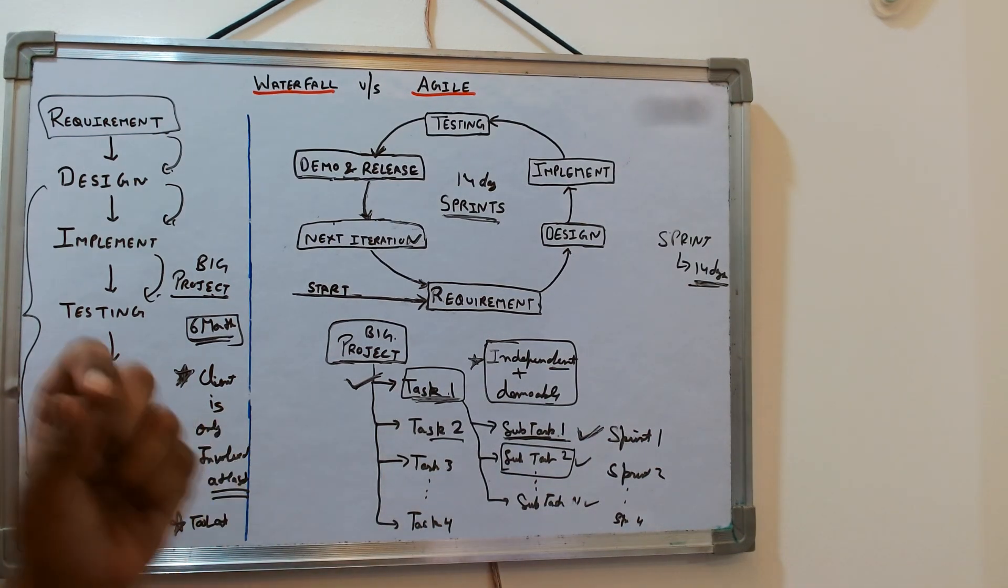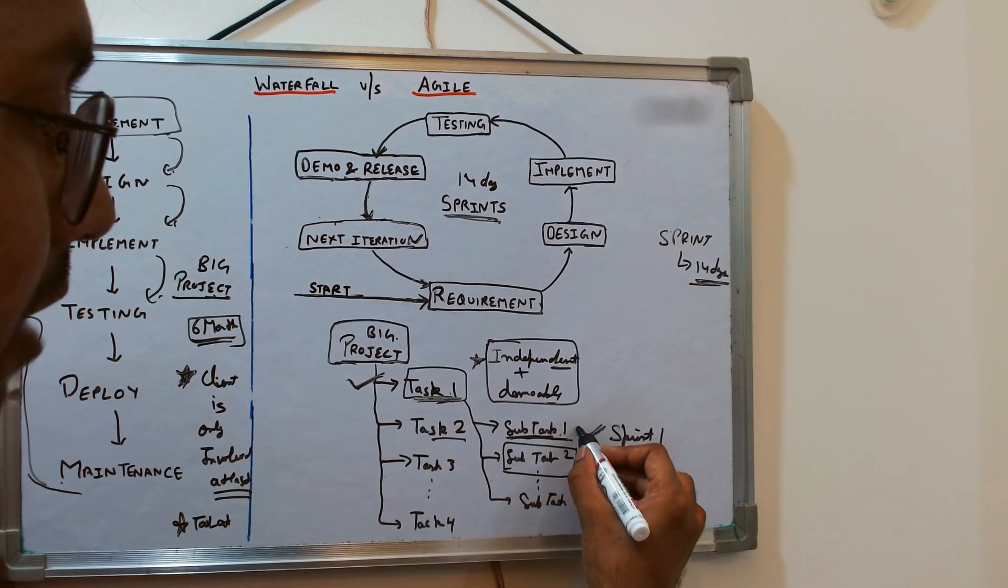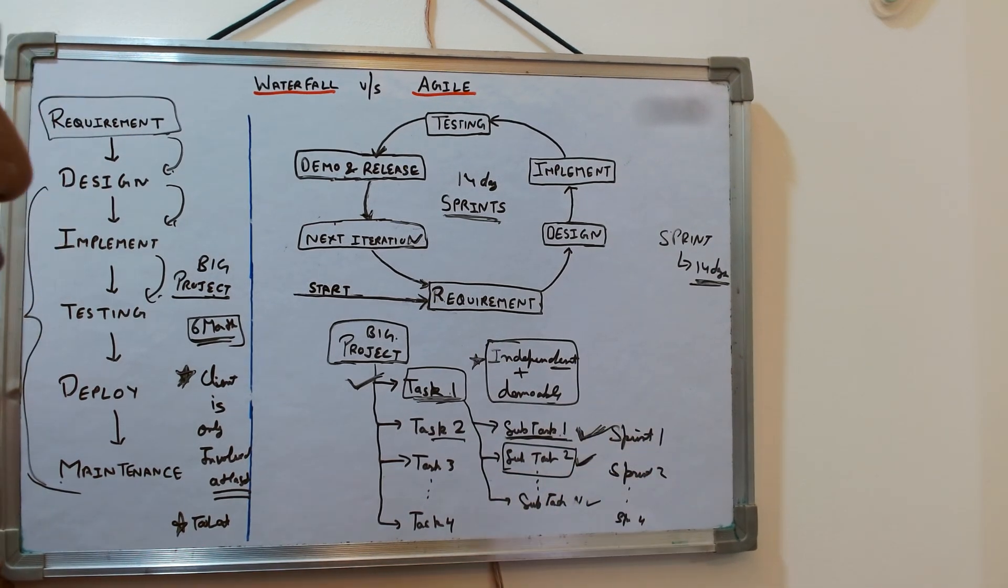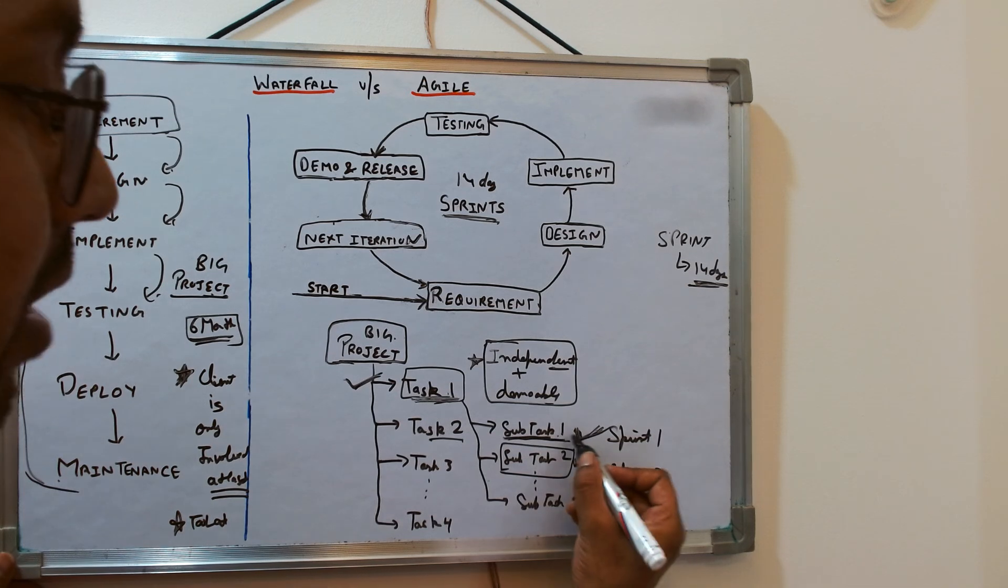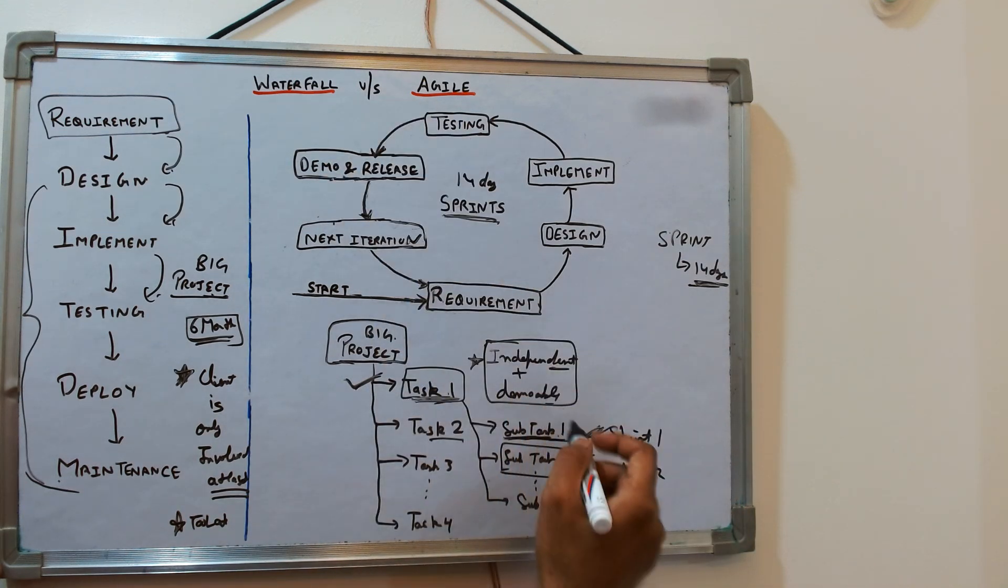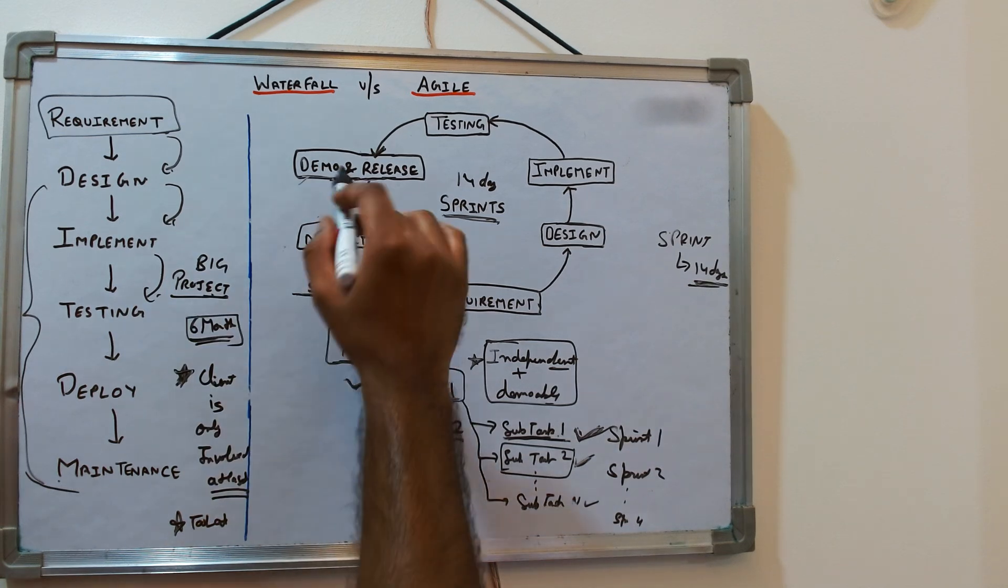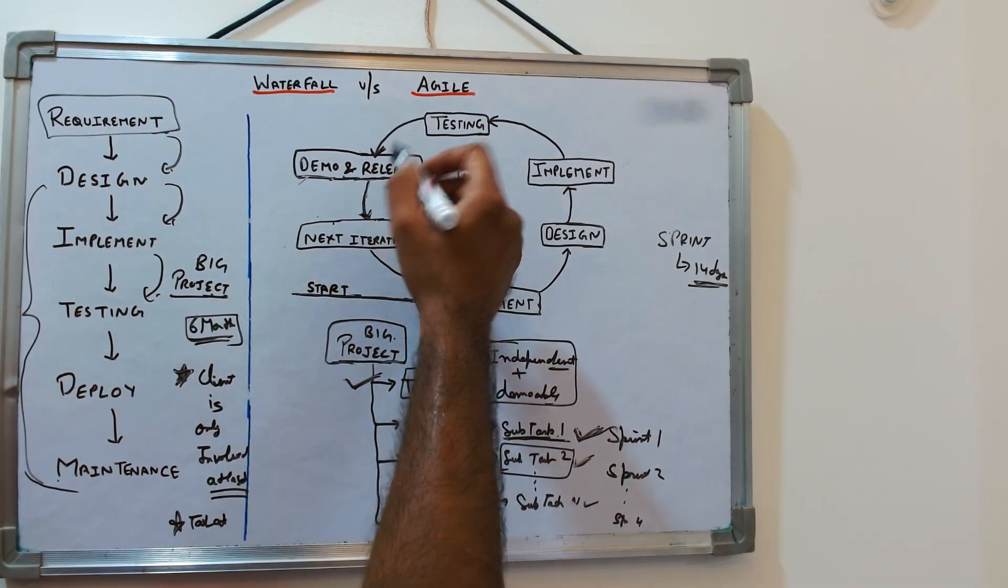This is where the biggest advantage of Agile is: it's fast. We're delivering features to market more quickly. Maybe it's not totally usable in some cases, but small features are going live. The second most important advantage is the client is involved at each task because you're giving the demo, taking feedback, either improving it, or if they're okay, you're releasing it.